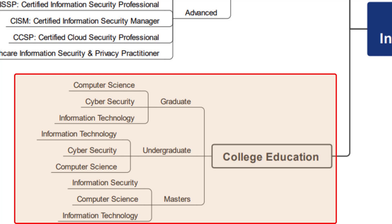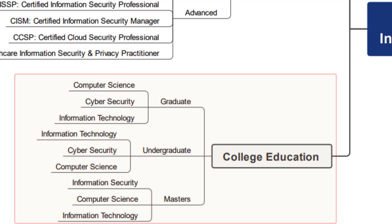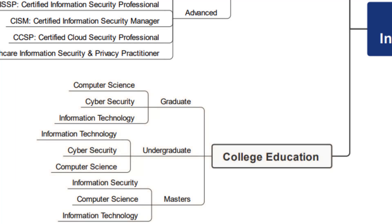In other areas of information technology, you might be able to break into the field with a certification and even make it up into middle management — director and senior director level. But many companies really require that you have a master's if you want to go above director or senior director level — vice president and higher. So if you are interested in information security management and want to go past the director or senior director level, you should look at the master's and make sure you have that on your resume. Some companies, if you are looking to become a CISO — a chief information security officer — may require that you have a master's degree.